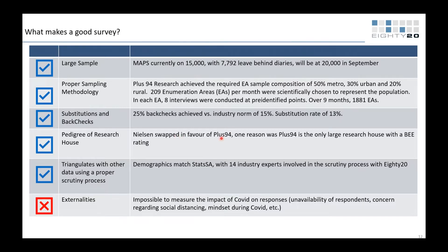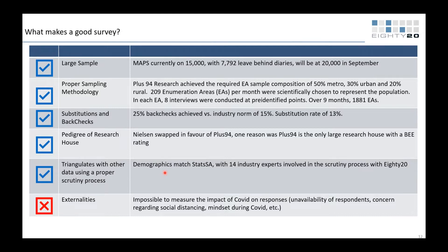In terms of research pedigree, they used to use Nielsen and now use Plus94, which is the only large research house in South Africa with a BEE rating. The data is triangulated with other datasets — 8020 is responsible for the scrutiny process, comparing it with other data sets to ensure accuracy. One downside is it's impossible to measure the full impact of COVID on responses, given unavailability, social distancing concerns, and the general mindset during COVID.